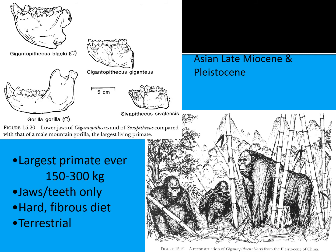In the Asian late Miocene and Pleistocene period, we also see Gigantopithecus — the largest primate ever, at 150 to 300 kilograms. We only have jaws and teeth of the specimen. We know it ate a hard fibrous diet based on its teeth, and it must have been completely terrestrial because it was so large it would have been impossible to move around in the trees.